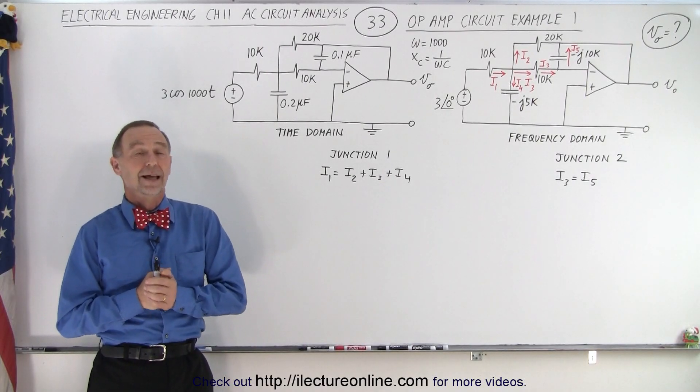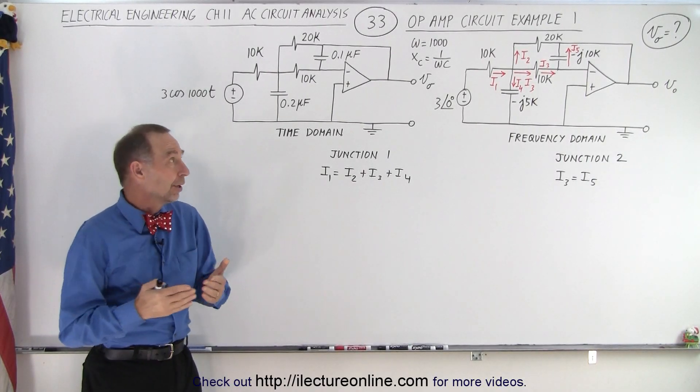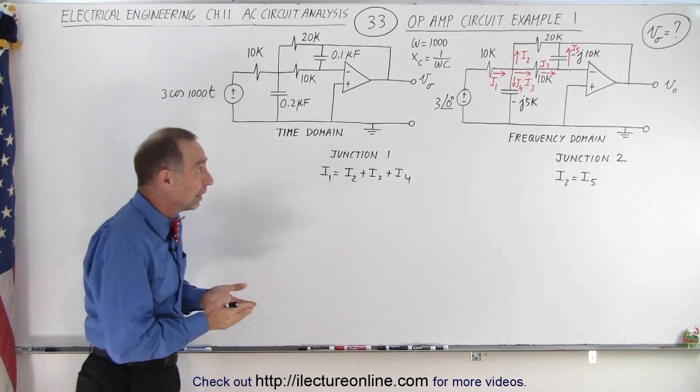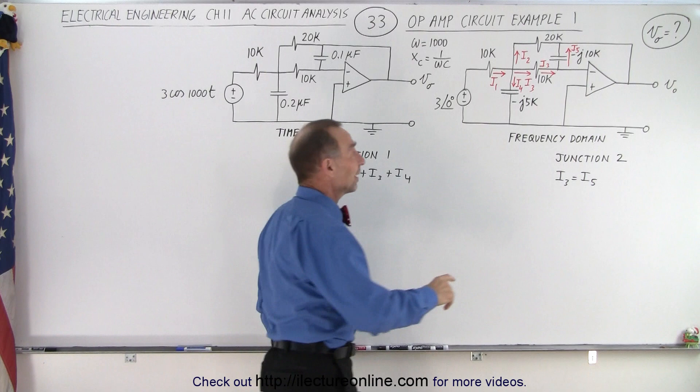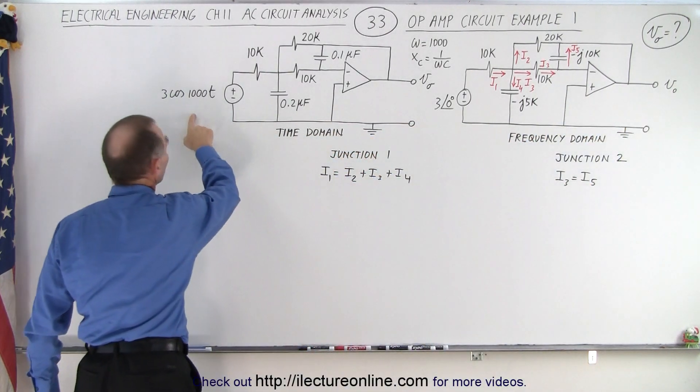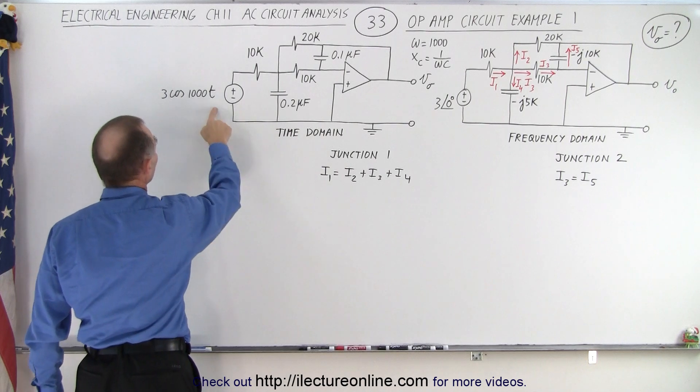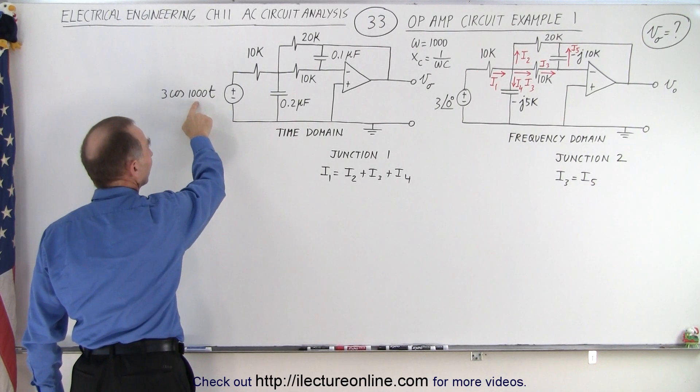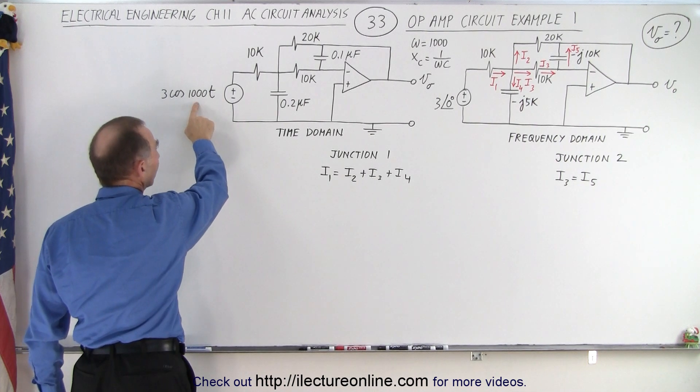Welcome to our lecture online. Now let's use what we've learned on some operational amplifier circuits. Here's our first example. What we're trying to find is the output voltage. We're given the input voltage, but notice we're in the time domain. So the input voltage is three times the cosine of a thousand T. That means omega, the frequency, is a thousand.